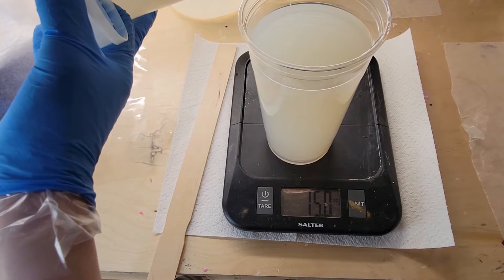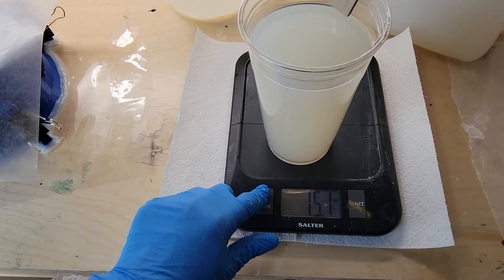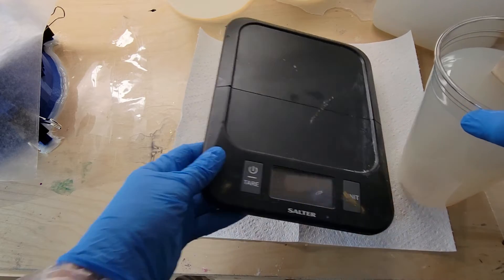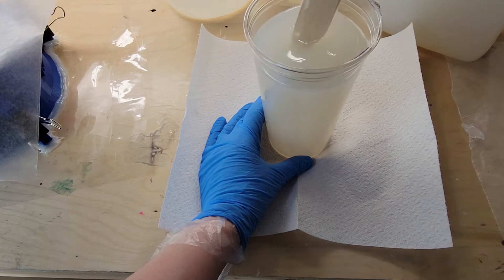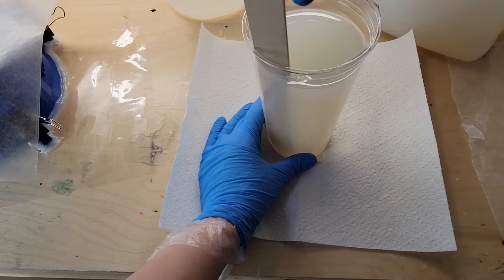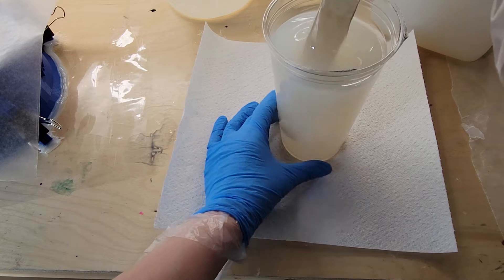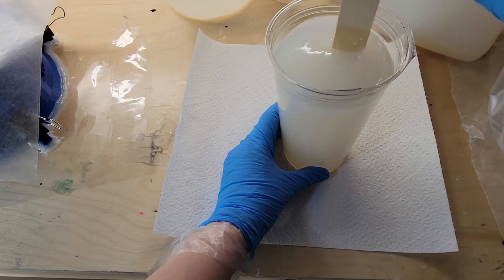I'm just waiting to get that 0.1 ounce out. I'm going to mix this up for five minutes. When you mix silicone rubber, you want to mix it slowly, just like when you mix resin. Scrape the sides of your cup, scrape the bottom, scrape off your stir stick, and mix slowly because you don't want to introduce a bunch of air bubbles into your silicone rubber.